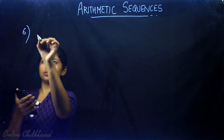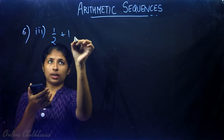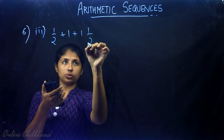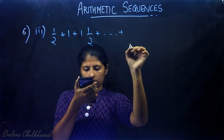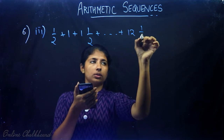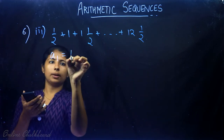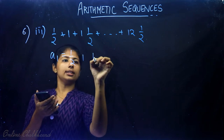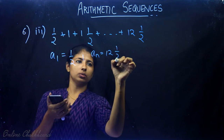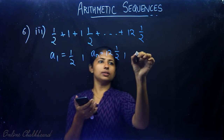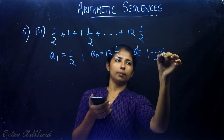The third part of this question is: ½ plus 1 plus 1½ plus and so on up to 12½. The first term is ½, the nth term (last term) is 12½, and the common difference equals 1 minus ½, which is ½.